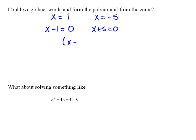And then we could multiply our binomials together, so that would be x squared plus 5x minus 4x would be plus 4x, and then minus 5 equals 0.